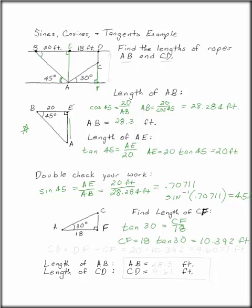This is not what we were asked for. We were asked for the length of CD. CD is DF, this entire height minus CF, what we just found. 20 minus 10.392 is 9.6077 feet.